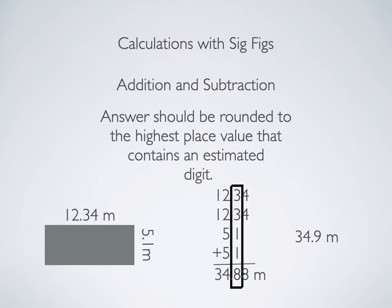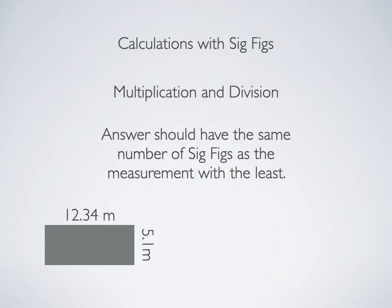Sometimes what I like to do is underline all of the estimated digits, and then I just drag my pencil across my page from right to left until I get to the last digit in my answer that has something underlined. You're only allowed one estimated digit in your answer.